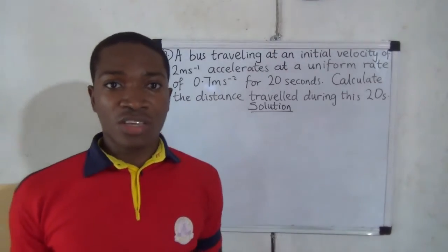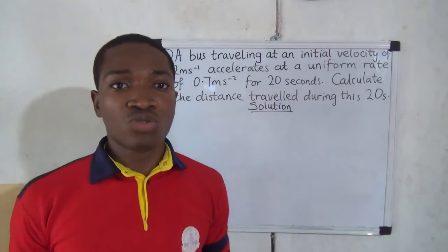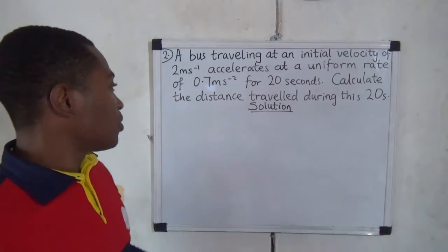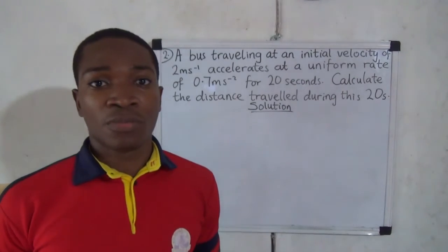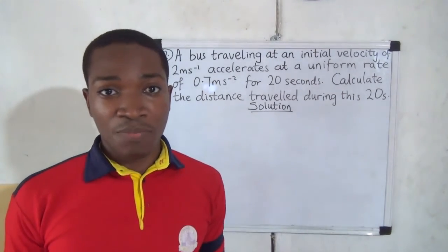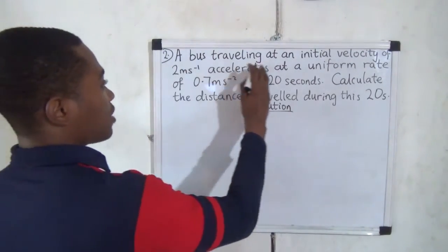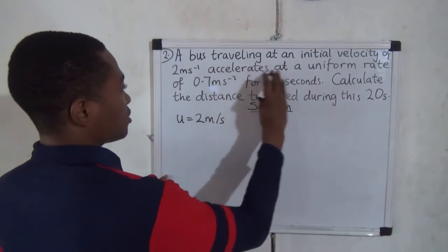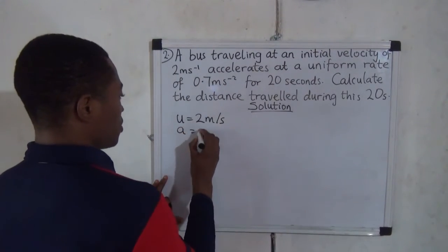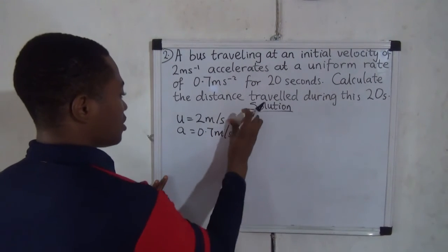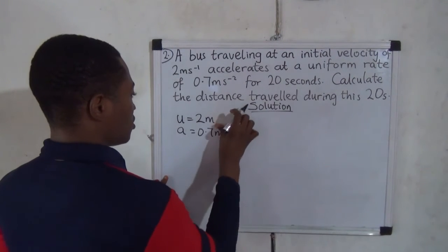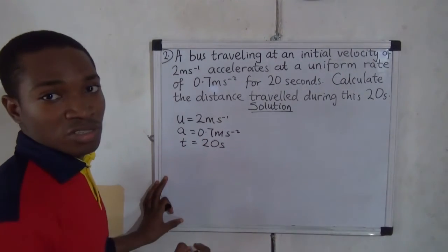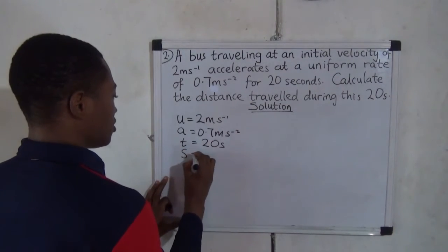Let's take another example. Example two: A bus travelling at an initial velocity of 2 meters per second accelerates at a uniform rate of 0.7 meters per second squared for 20 seconds. Calculate the distance travelled during these 20 seconds. The parameters are: initial velocity U = 2 m/s, acceleration A = 0.7 m/s², time T = 20 seconds, and S (distance) is the unknown.